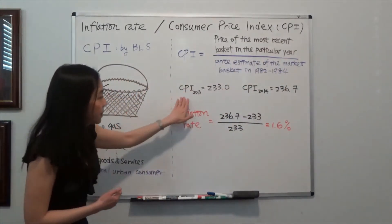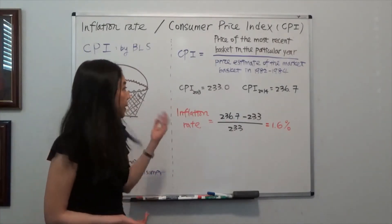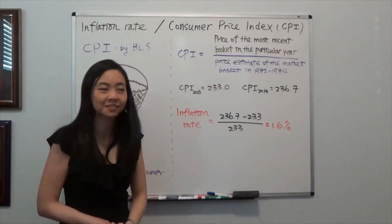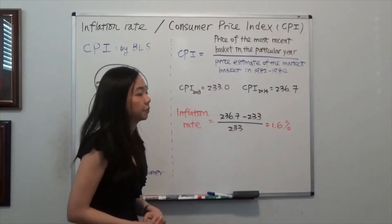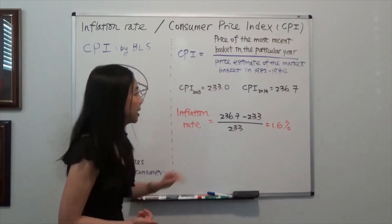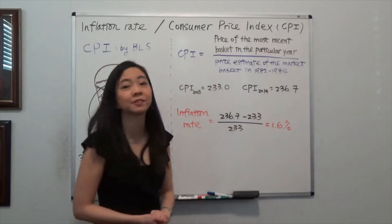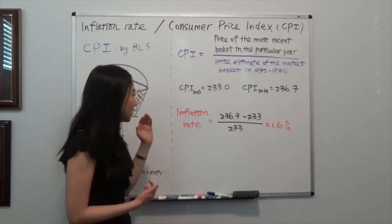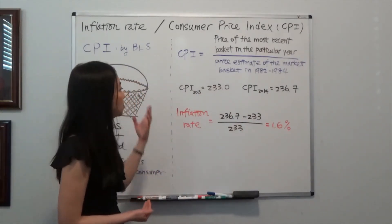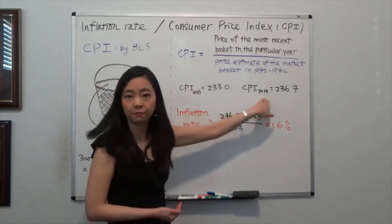And the CPI in year 2013 prepared by the Bureau of Labor Statistics is equal to 233. And the CPI in year 2014 is 236.7. So we can calculate the inflation rate between 2013 to 2014.